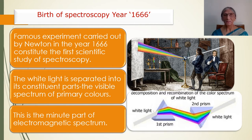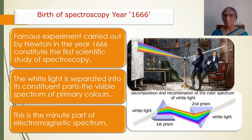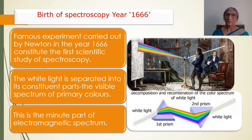At that time, other scientists objected that it is the prism which is giving color to white light, and that light does not consist of seven colors. To prove his point, Sir Isaac Newton placed another prism in front of the seven colors, but the prism was placed in an inverted manner. He showed that the seven colors, when reflected through the inverted prism, produce white light.